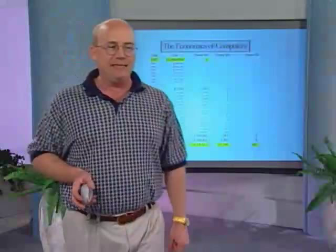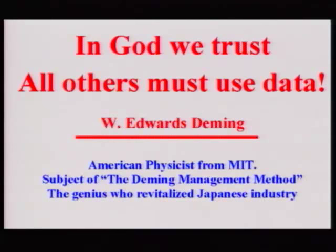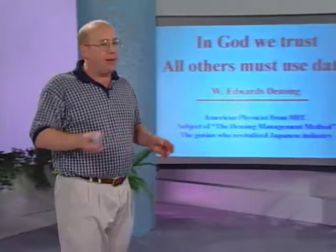We've got to put these two systems together, get it on one system, one standard, and link that up with these big banks — that's our financing era — and we're going to get incredibly wealthy. In 1962, the amount of computing power you can buy today for a penny would have cost $10 million. That's how much faster and more powerful computers have become. W. Edwards Deming — the American physicist from MIT — always said, in God we trust; all others must use data.